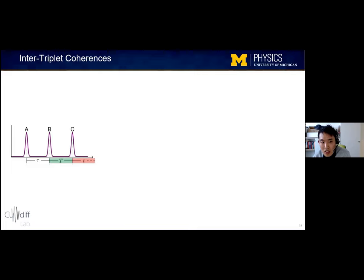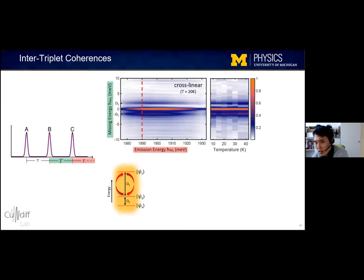And because we observe these triplet state coherences in the 2D spectra, we should, in principle, be able to generate and measure coherences between the triplet states as well. And these inter-triplet coherences would show up as sidebands in what are called zero-quantum spectra, which are acquired by scanning and Fourier transforming along this intermediate time delay, capital T. And first, we took these zero-quantum spectra with co-linear excitation, but we actually didn't observe any electronic sidebands, while we did observe many vibrational sidebands, which I won't show here, but I have an extra slide on those if there's interest. And this is what the cross-linear zero-quantum spectra look like, where we see two clear sidebands that indicate coherences between states Y and Z. And here, we have slices taken along this red dashed line as a function of temperature, which show that these inter-triplet coherences are robust against thermal dephasing, since their line widths don't increase as we increase the temperature up to 40 Kelvin.